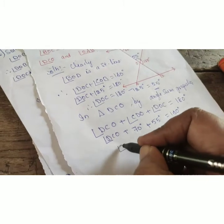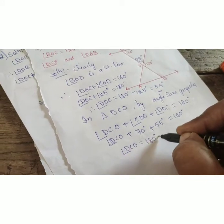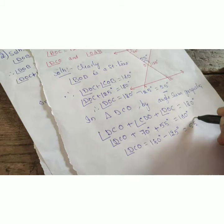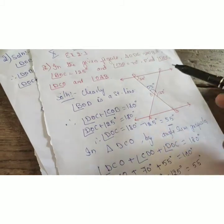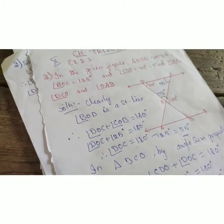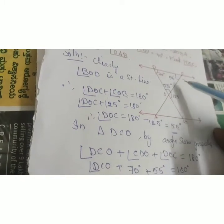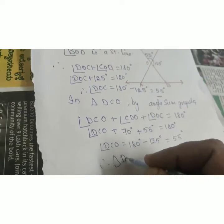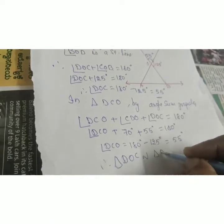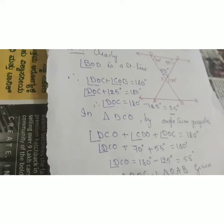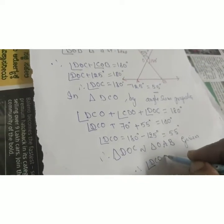So angle DCO equals 180 minus 125, which gives 55 degrees. Therefore DCO is 55 degrees. Now since triangle DOC is similar to triangle OAB, by the similarity correspondence, angle DCO equals angle OAB, which is equal to 55 degrees.